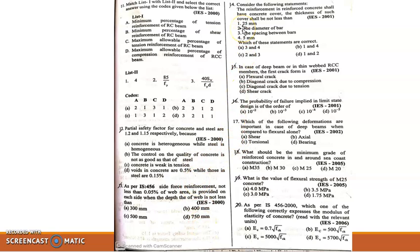Moving to 14th question: Consider the following statements. The reinforcement in reinforced concrete shall have concrete cover. The thickness of such cover shall be not less than: 25mm, diameter of bar, spacing between bars, or 5mm. The correct answer is option B. Nominal cover to the reinforcement should not be less than 25mm or diameter of the bar according to IS 456-2007.